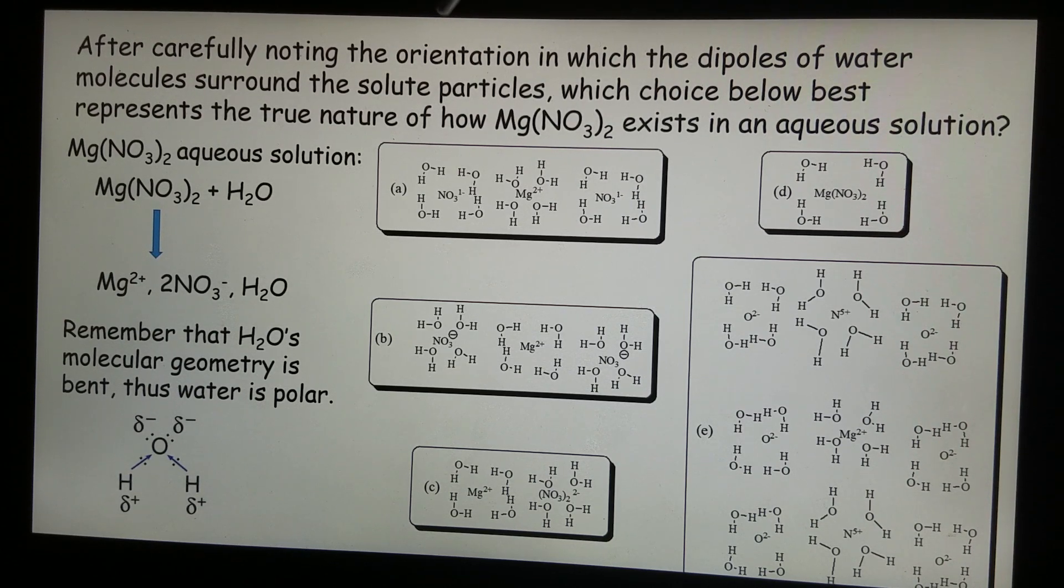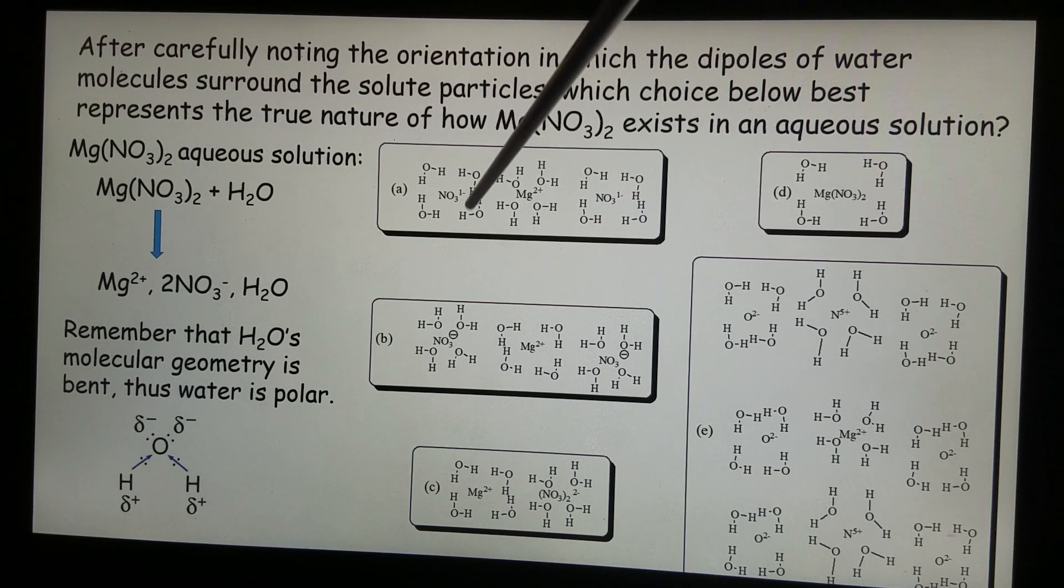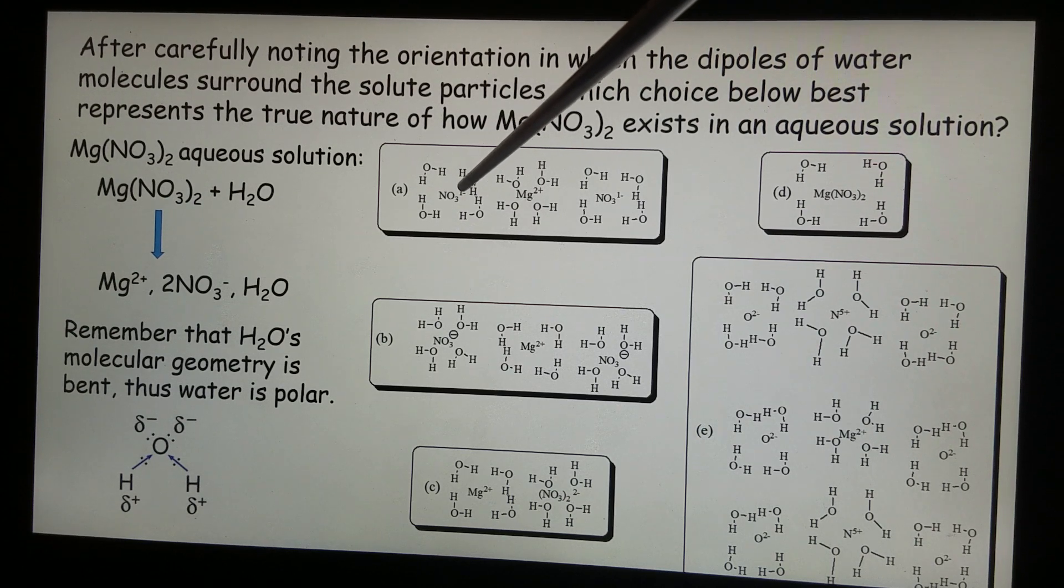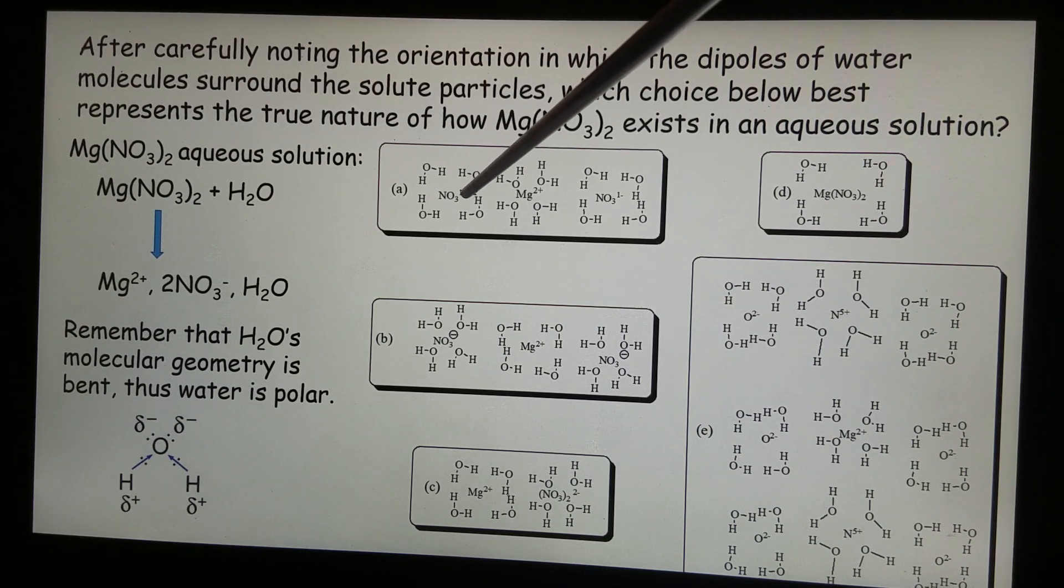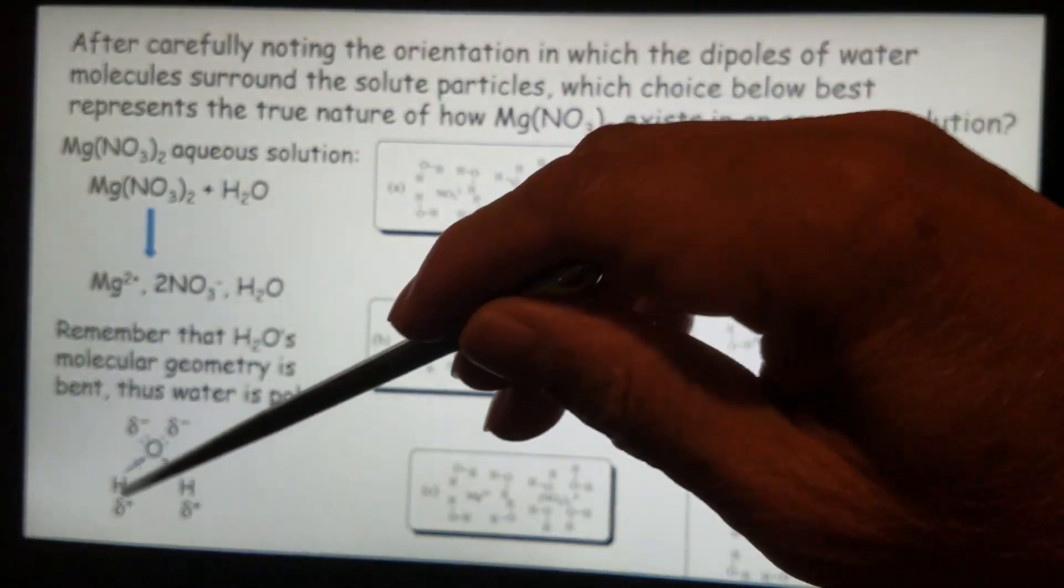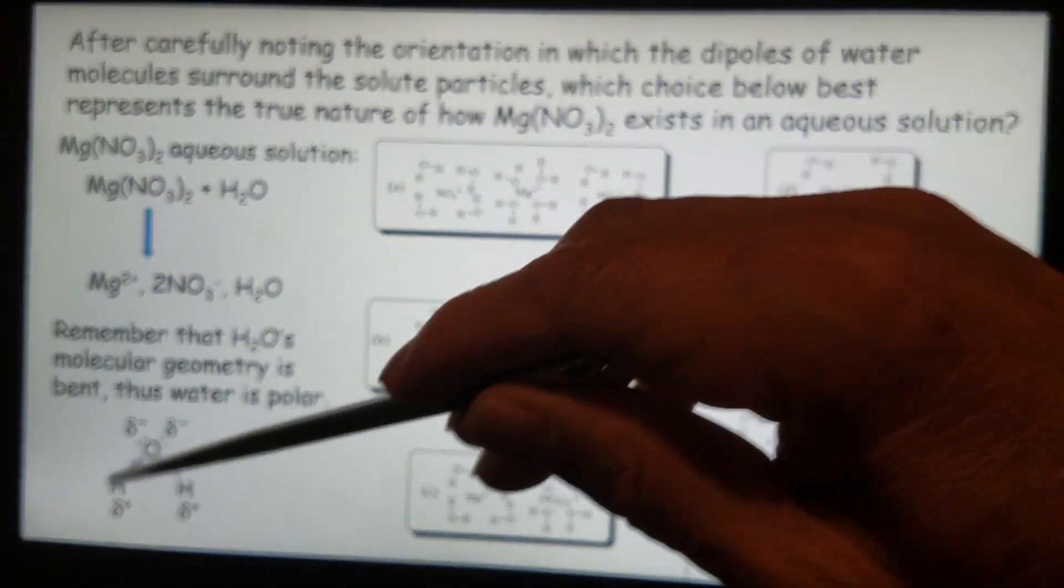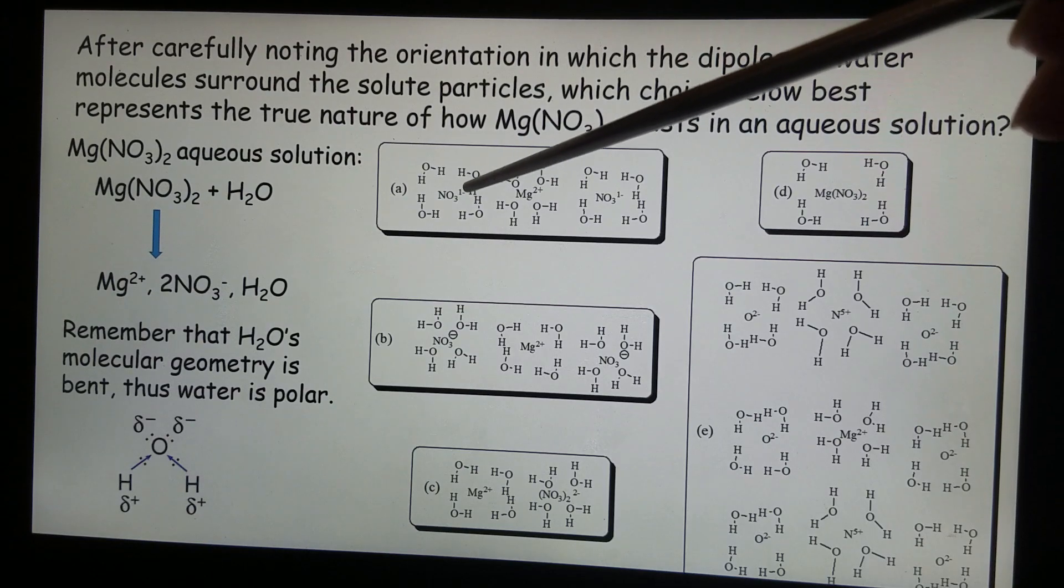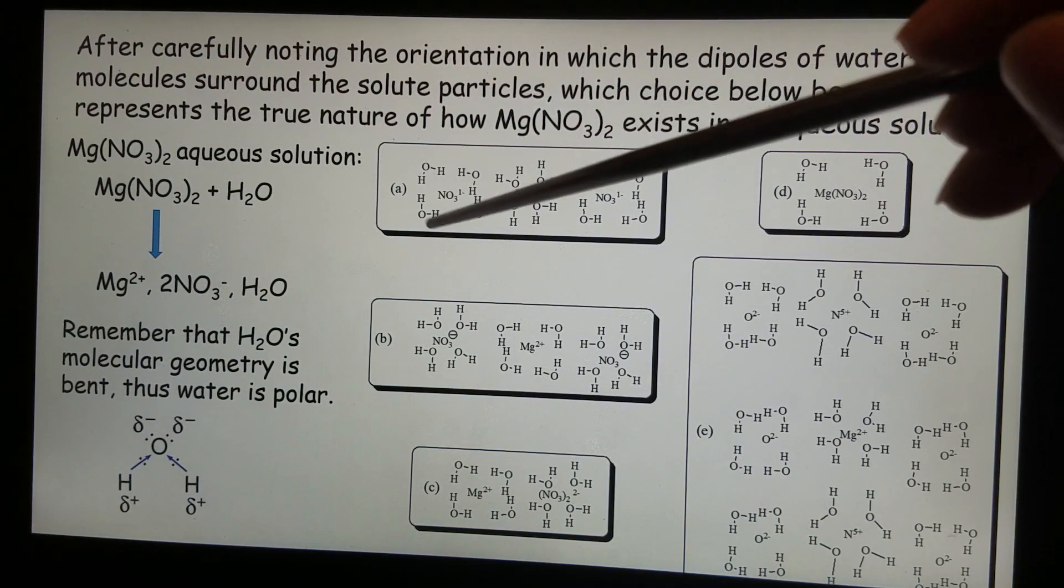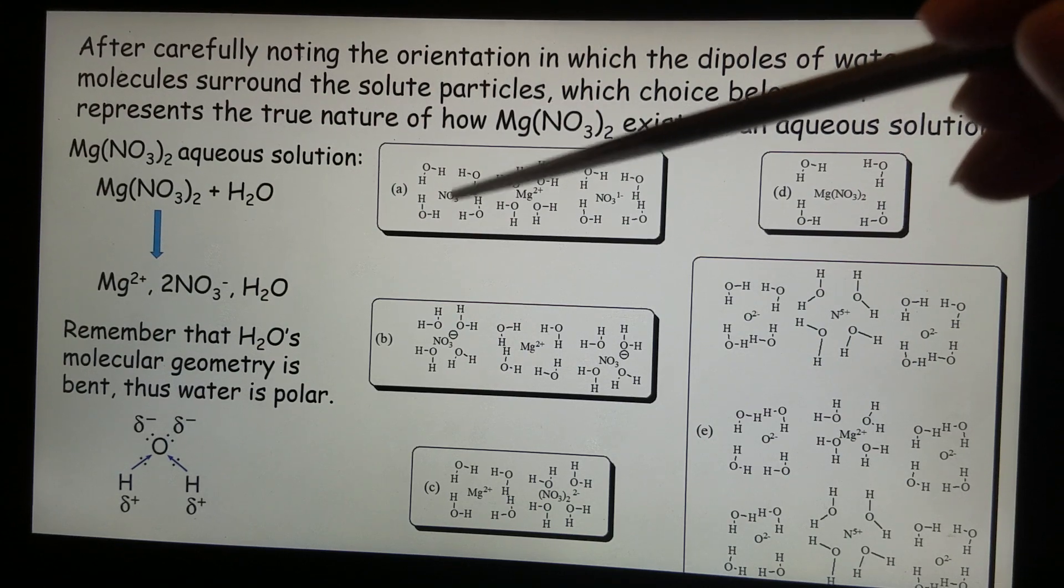But let's take a look at the line up, the arrangement. Nitride, that's an ion, negative one charge, and that should attract the positive end of the water molecule. So therefore you can see the H's are closer to nitride.